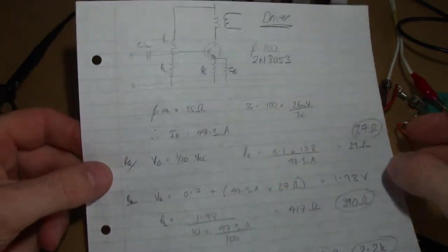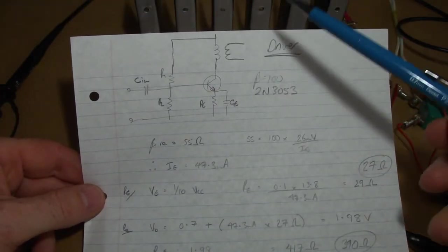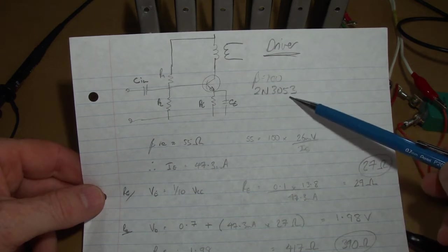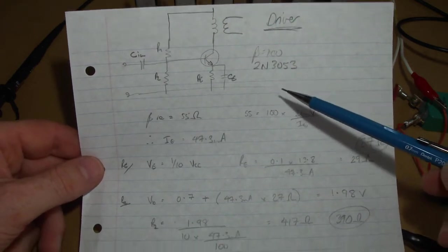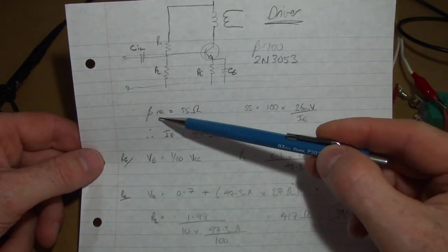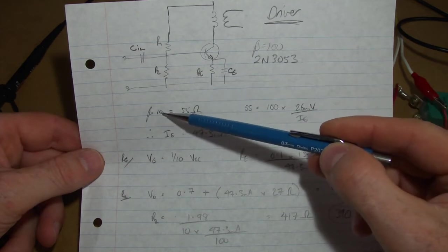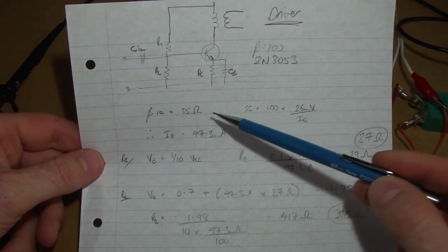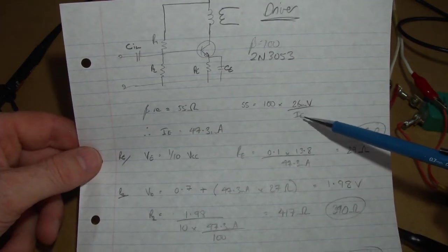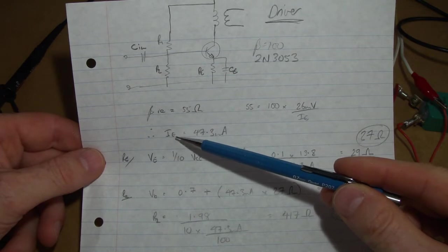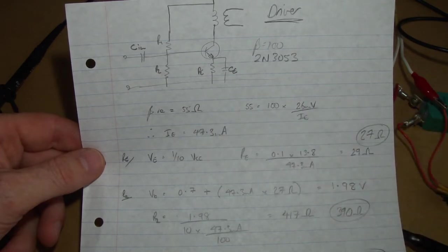So, in line with what I've done in previous circuits, just assign a beta of 100, which is about right for the 3053. I've set beta RE, because I've got a fully bypassed RE here, or large RE, to be 55 ohms. And then noting that little RE is 26 millivolts over IE, we can solve for IE, which turns out to be around 47 milliamps.